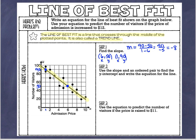Another way to find slope is to just use the two points on the graph — start at one point, go straight down, then straight over, and count the change in y over change in x. Going from 50 to 90 is a change of 40, and going from x=1 to x=6 is a change of 5. So negative 40 over 5 also gives me negative 8. Either way — counting spaces or using the slope formula — I get negative 8.